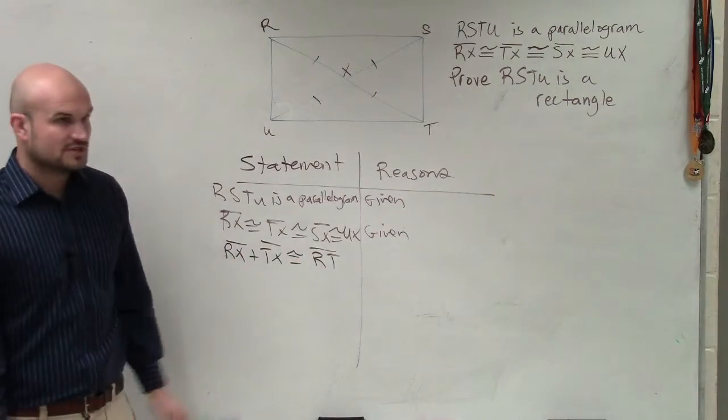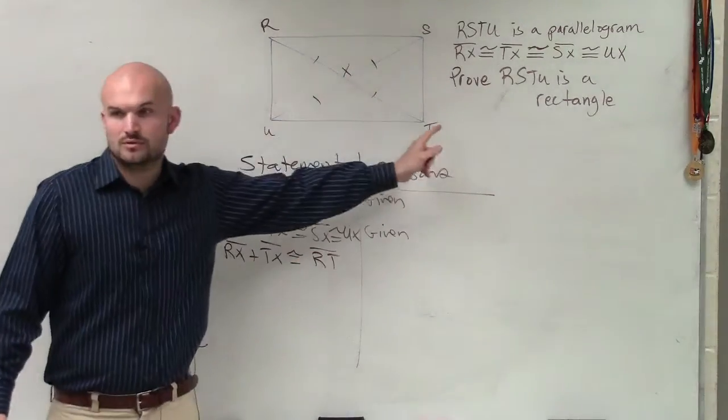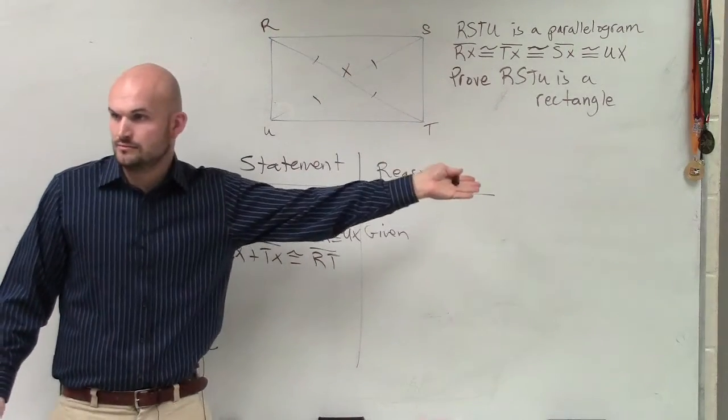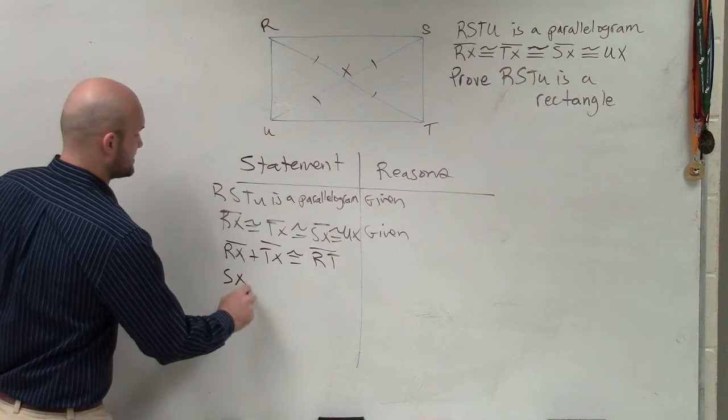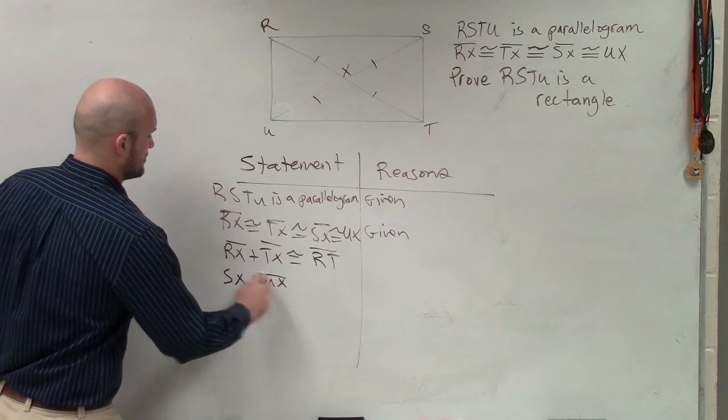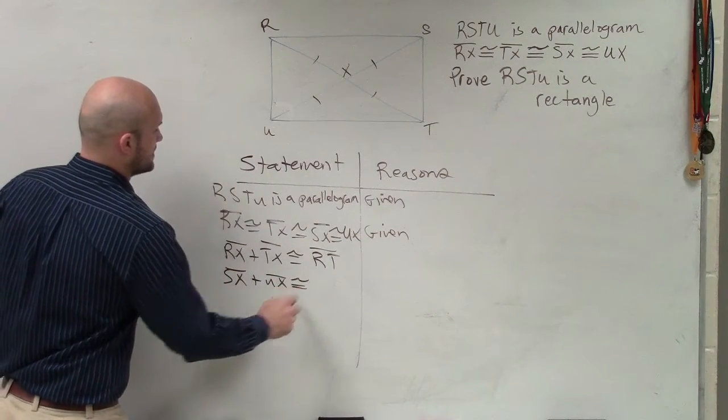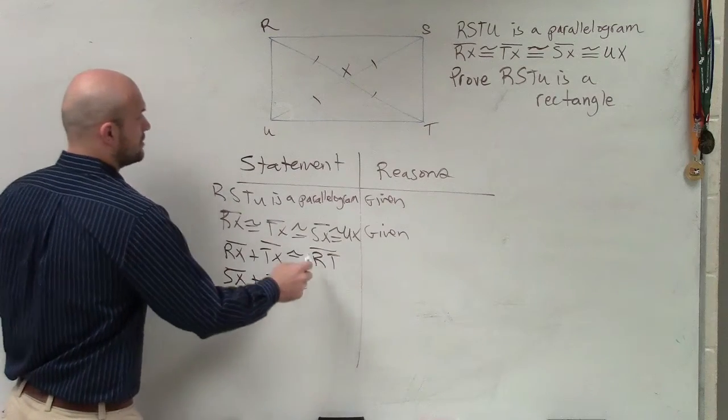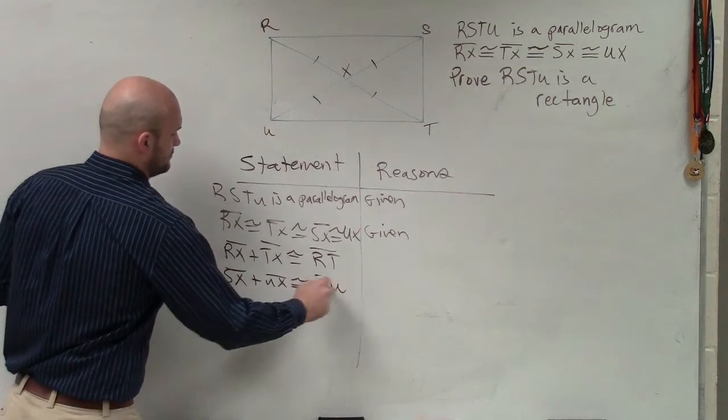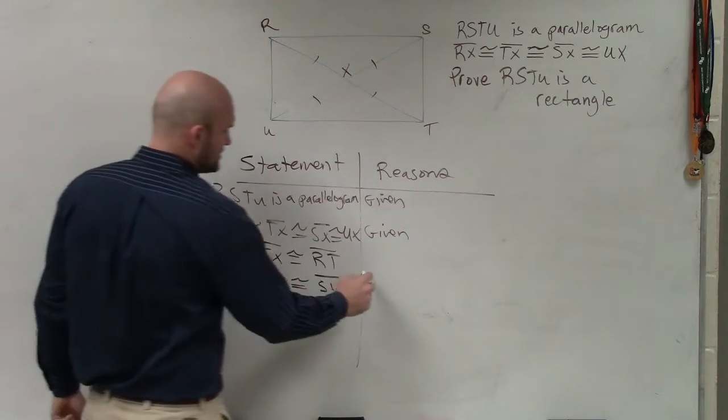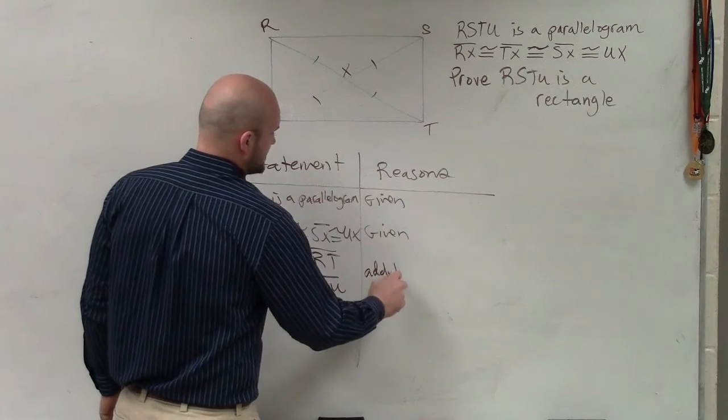The sum of these two lines equals the whole line, yeah? And then I would also say that SX plus UX is congruent to SU. And why do we know that? Well, that's just because of the addition property. You can just add them up.